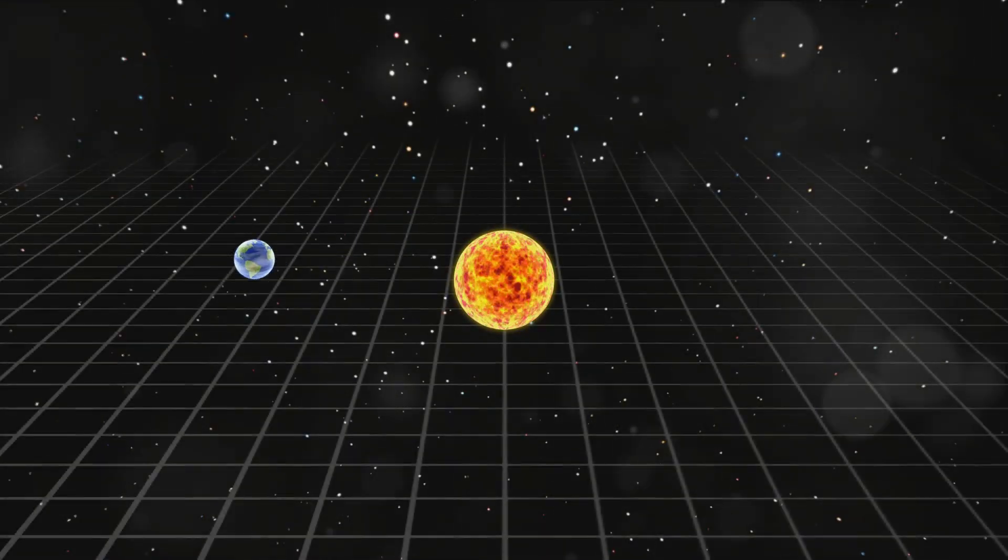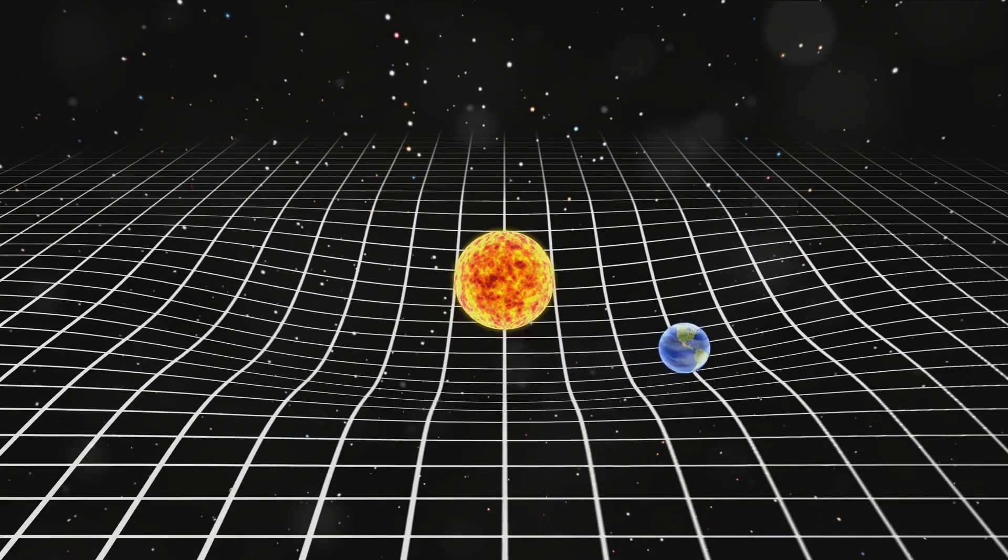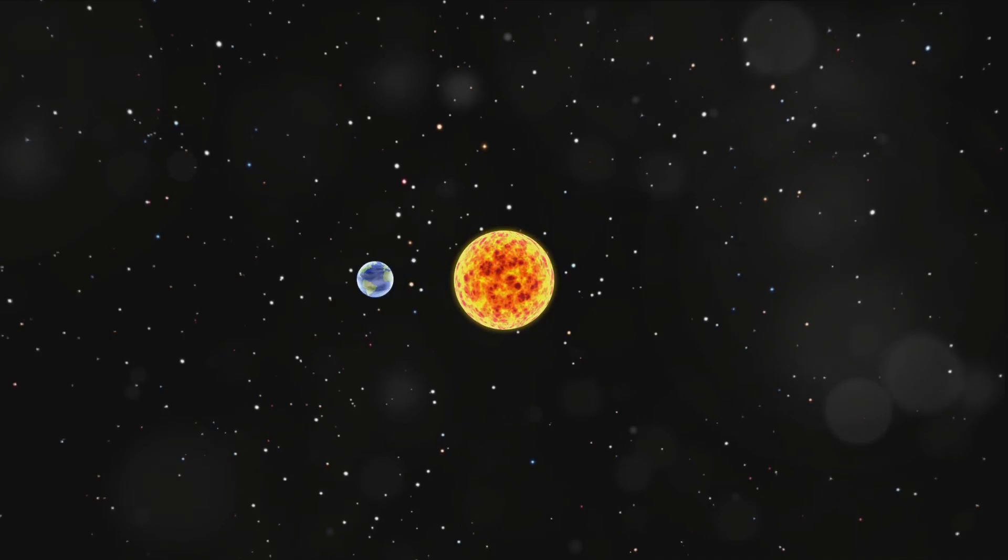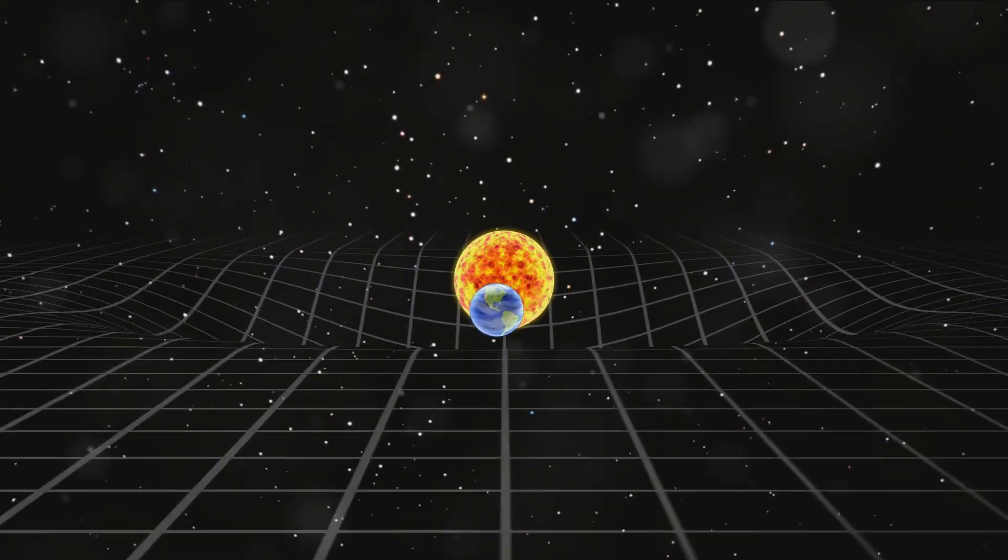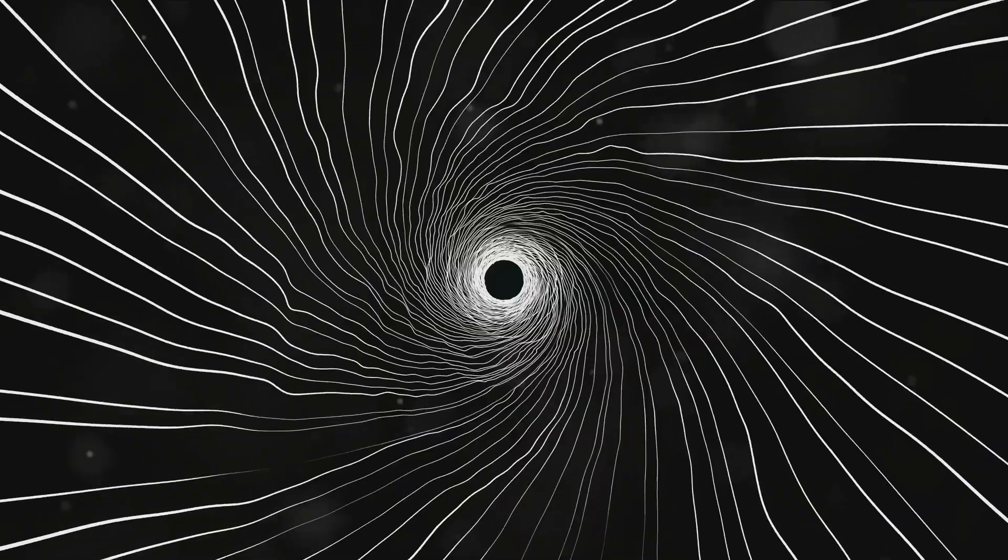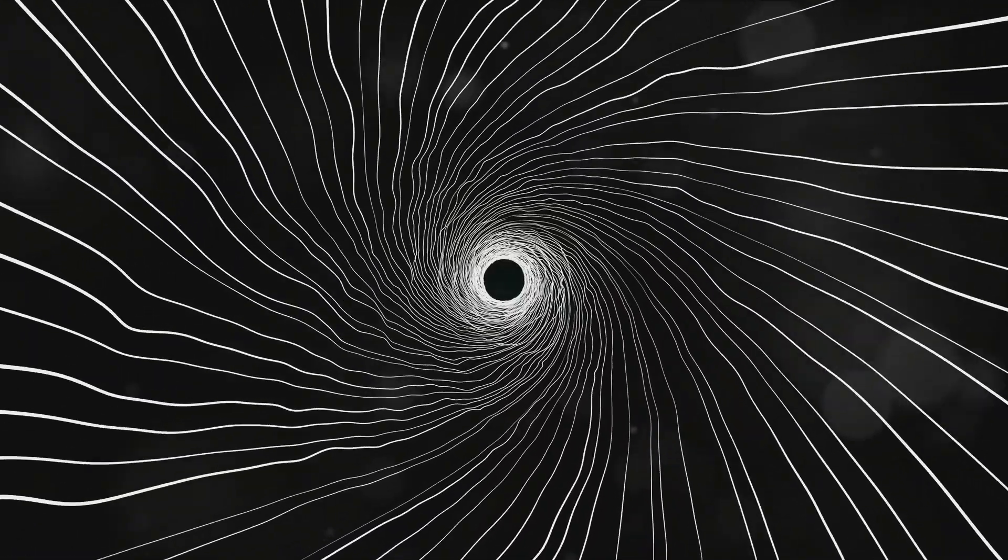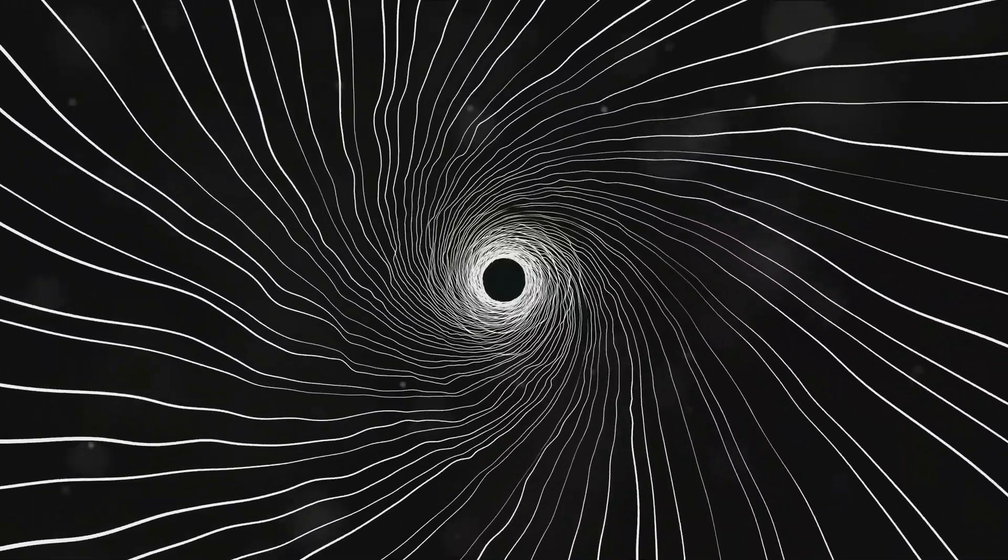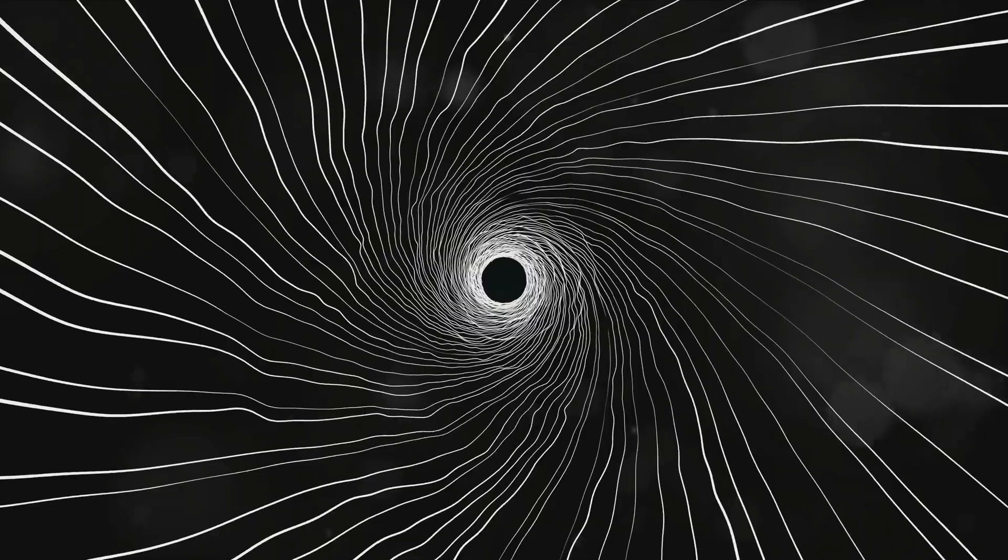These aren't just theoretical musings. GPS satellites have to correct for time dilation, because they're moving relative to the Earth. Without this correction, your GPS location would be off by several kilometers. Einstein painted a picture of the universe where time and space are not rigid, but flexible entities that bend and stretch.